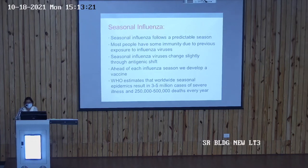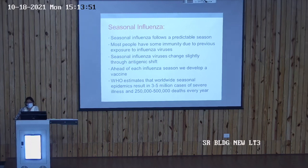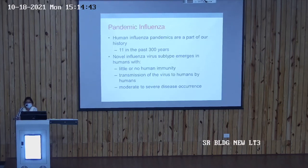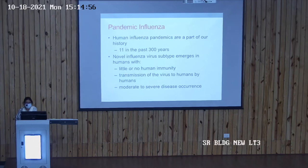Seasonal influenza follows a predictable season. Most people have some immunity from previous exposure to the influenza virus. Pandemic influenza involves a novel influenza virus that emerges in humans with little or no human immunity, and there have been about 11 pandemics in the past 300 years, with human-to-human transmission of the new virus.